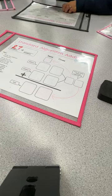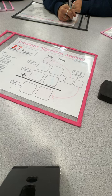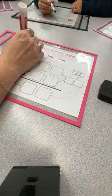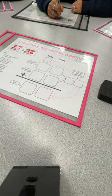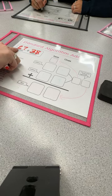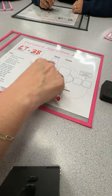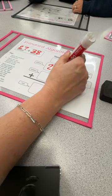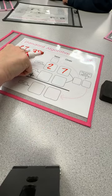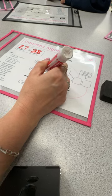So the first number we're gonna add is 27. Write 27 in your first spot, and the number we're gonna add to that is 38. Now we're gonna take our first addend and put it in the first two boxes, 27, and our second addend will go in the boxes below, 38.